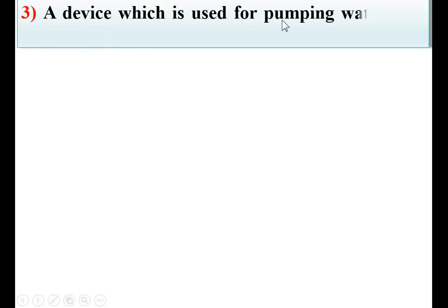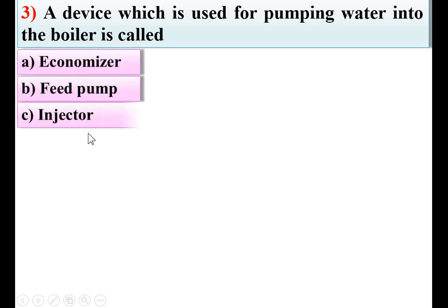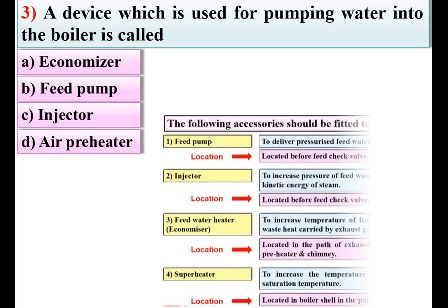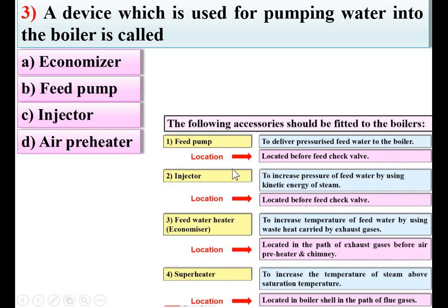A device which is used for pumping water into the boiler is called — options: economizer, feed pump, injector, air preheater. Here you can see the different accessories, and the function of the feed pump is to deliver pressurized feed water to the boiler. The question is about pumping water into the boiler, so feed pump — option B — is the right answer.